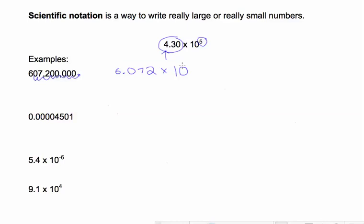But if you remember that to the left is positive, then you have to take it to the right to get it out of scientific notation. So we have 6.072 times 10 to the positive 8th.